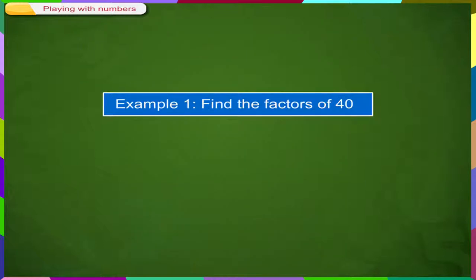Example 1. Find the factors of 40. Solution. Factors are 1, 4, 5, 10 and 40 are factors of 40. We see 40 in the tables of all these numbers.